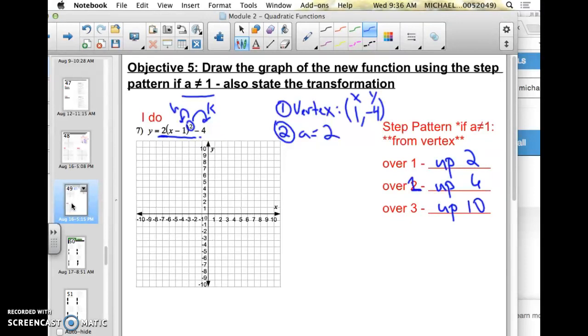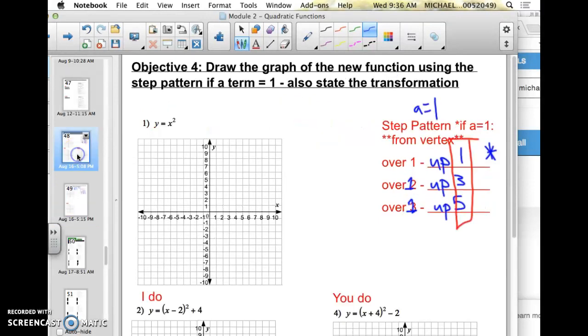It's going to become, instead of 1, 3, 5, it's going to be up 2, up 6, up 10. Over 1, over 1, over 1. So if you notice, over 1 up 2, over 1 up 6, over 1 up 10, instead of the original over 1 up 1, over 1 up 3, over 1 up 5. So the 1, 3, 5 doubles. It becomes 2, 6, 10.